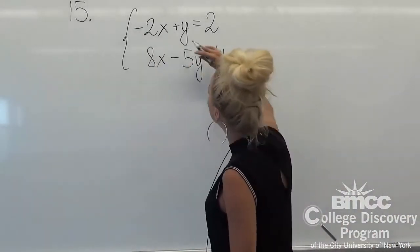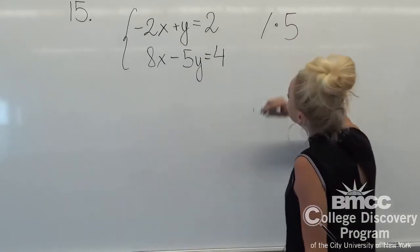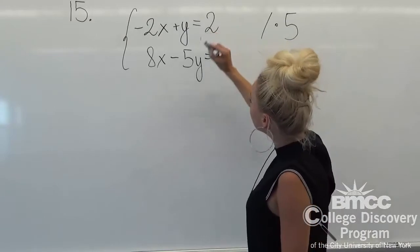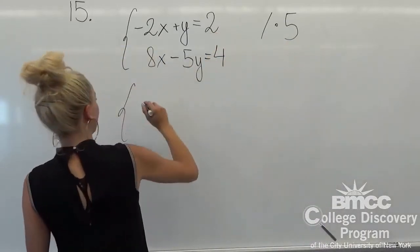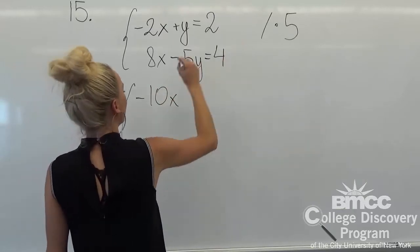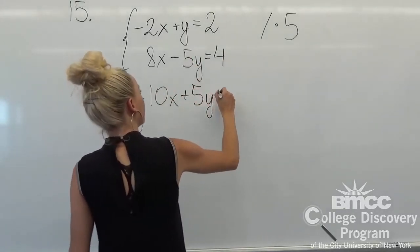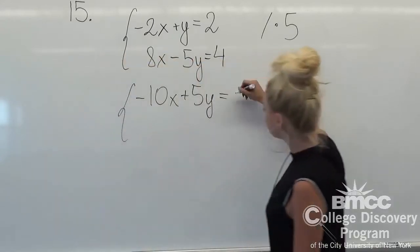So our first equation, we're going to times it by 5. So from our first equation, we're going to have minus 10x plus 5y and it's equal to 10.